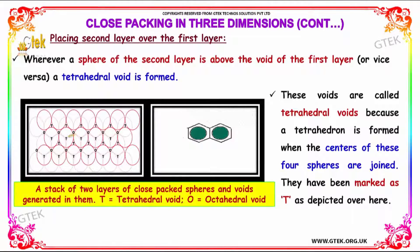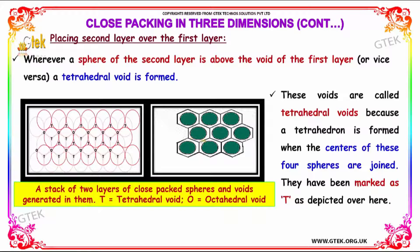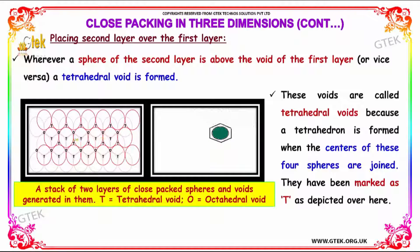Whenever a sphere of the second layer is above the void of the first layer, a tetrahedral void is formed. These voids are called tetrahedral voids because a tetrahedron is formed when the centers of these four spheres are joined. They are marked as T.